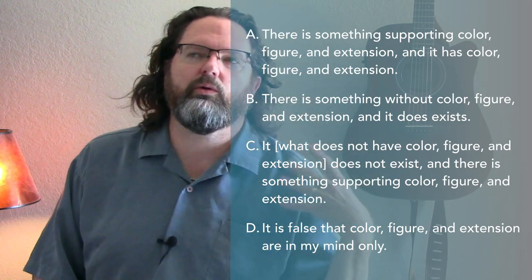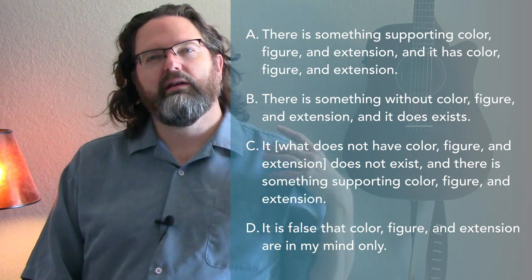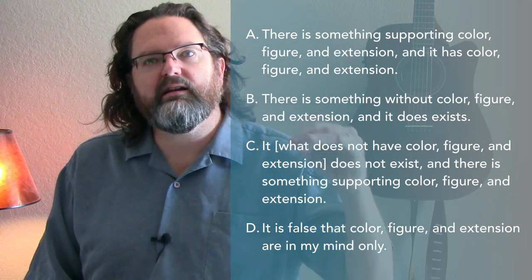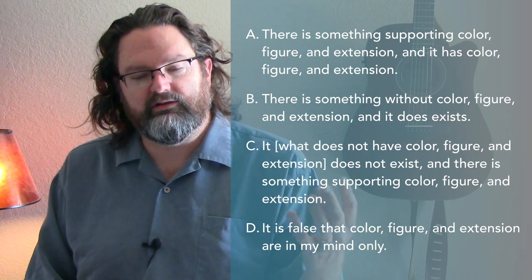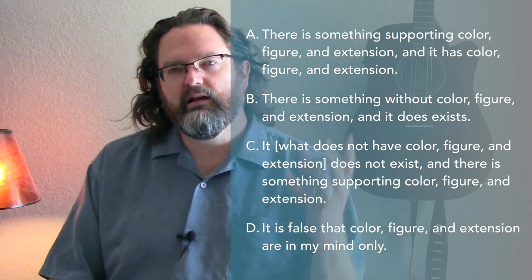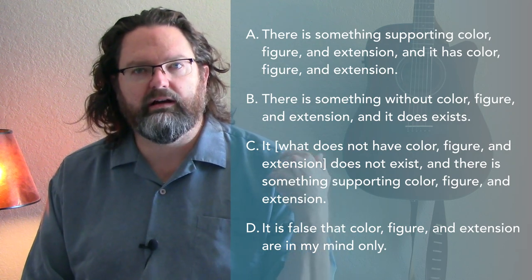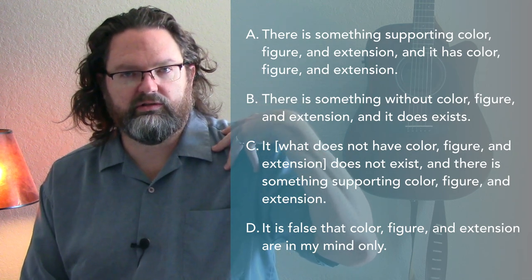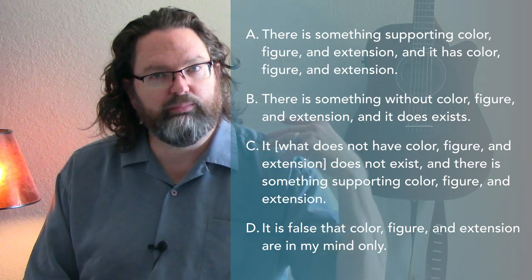But what happens if we say the qualities themselves have color, figure, and extension? Well, if we say something like that, then the qualities themselves have some color, figure, and extension, but then that color, figure, and extension has to be supported by a material substance. And it's what we're saying by this rejection of this premise — that color, figure, and extension, and that whatever is supporting it also has color, figure, and extension. So the qualities of my shirt are causing blue, but then they also have a color. Well, if there's a color there, then there's something supporting it.